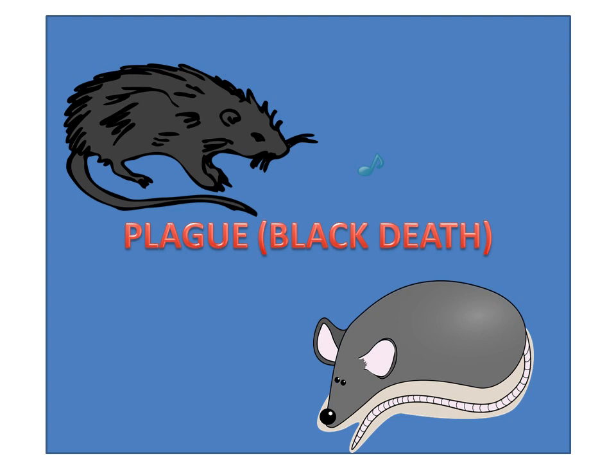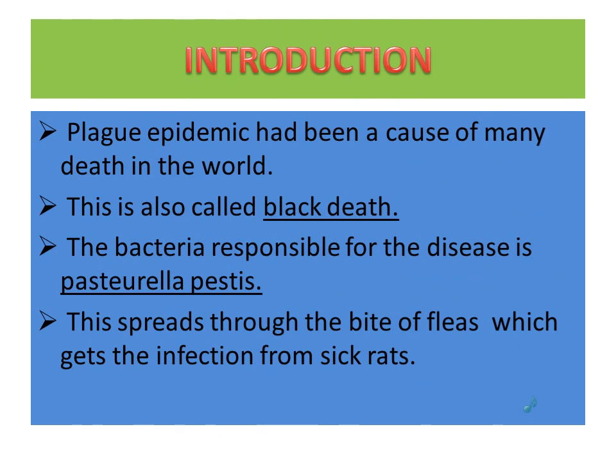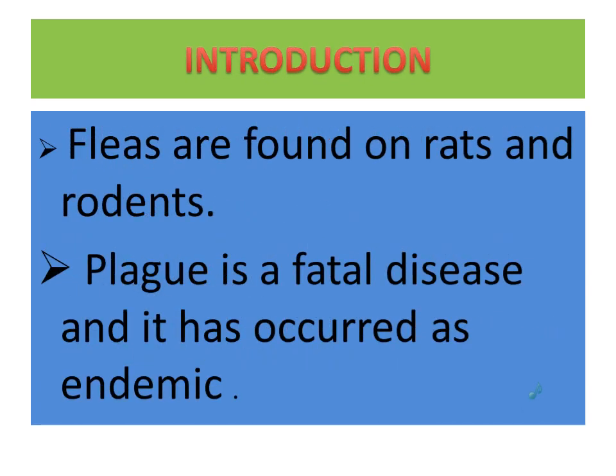Plague epidemic has been a cause of many deaths in the world. This is also called black death. The bacteria responsible for the disease is Pasteurella pestis. This spreads through the bite of a flea, which gets the infection from a sick rat. Fleas are found on rats.